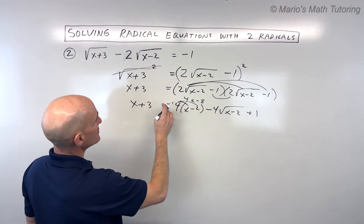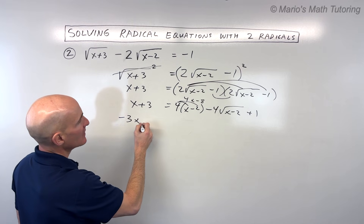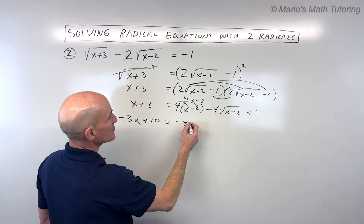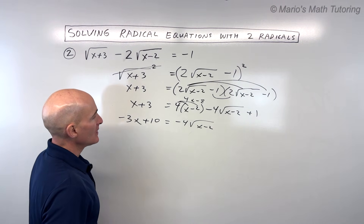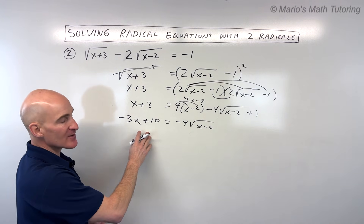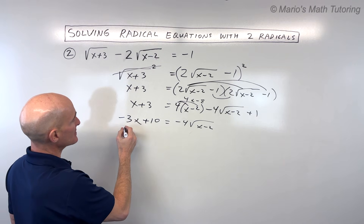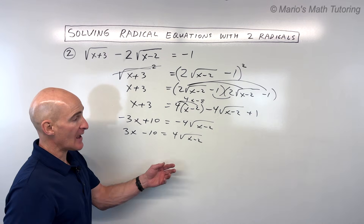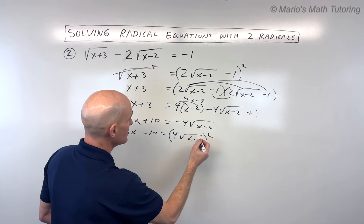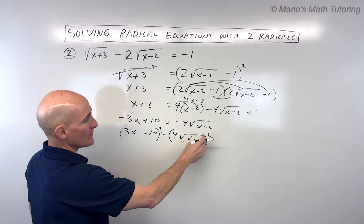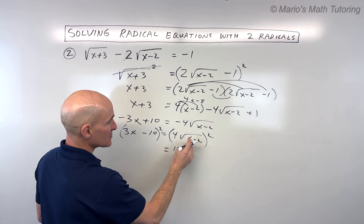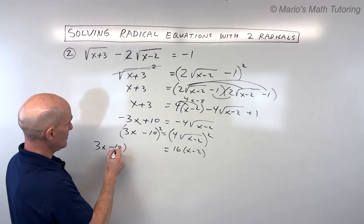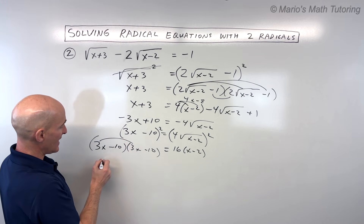That simplifies the right side to four x minus eight, minus four times the square root of x minus two, plus one. Subtracting four x from both sides gives negative three x. Combining constants gives negative seven, so adding seven to both sides yields positive ten equals negative four times the square root of x minus two. Dividing by negative one gives us three x minus ten equals four times the square root of x minus two.